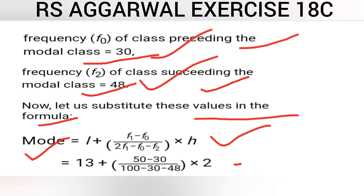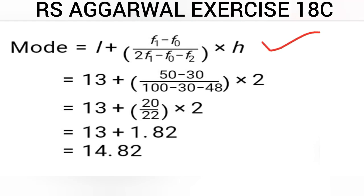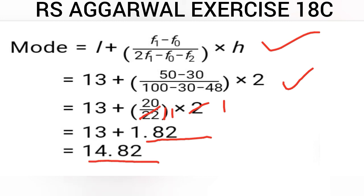Substituting all the values carefully: we get 50 − 30 = 20 in the numerator, and 2×50 − 30 − 48 = 22 in the denominator, multiplied by h = 2. So we get (20/22) × 2 = 20/11 = 1.82. Adding this to l = 13, we get 13 + 1.82 = 14.82. So mode = 14.82, and the question is complete.